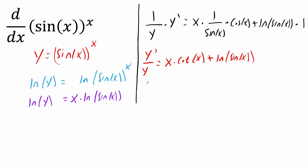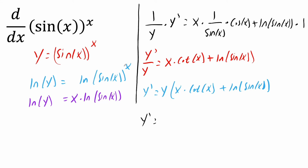Now we want to get y prime by itself, so we multiply both sides by y. We get y prime is equal to y times the quantity x times cotangent(x) plus ln(sine(x)). The last thing to remember is that y is what we originally had, so we substitute back sine(x) raised to x.